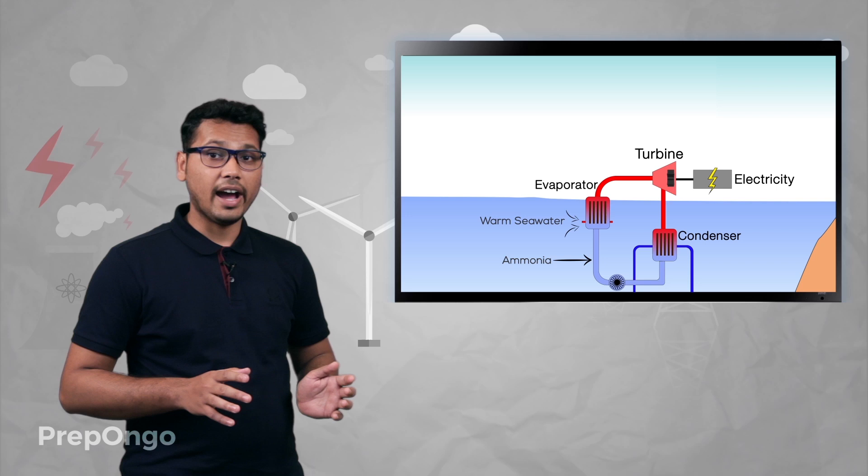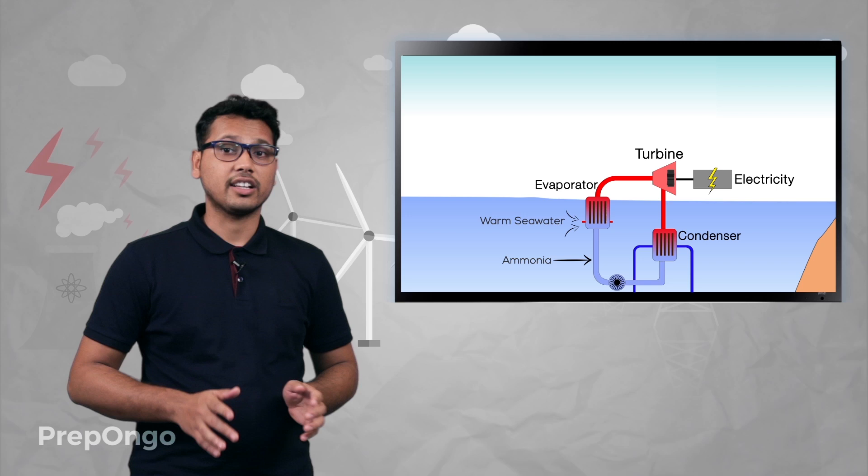Then the water from the deeper levels is pumped up and this vapor is again converted back to the liquid, and hence a cycle completes. By this cycle we can generate electricity. The electricity thus produced can be used to run our appliances.